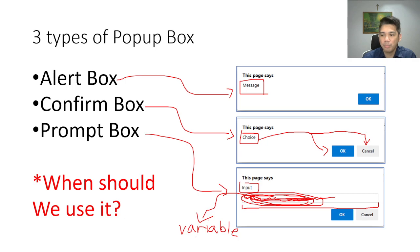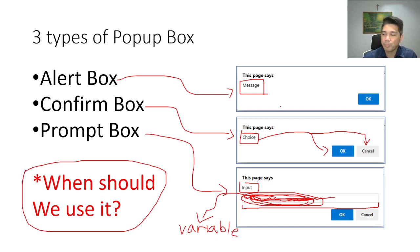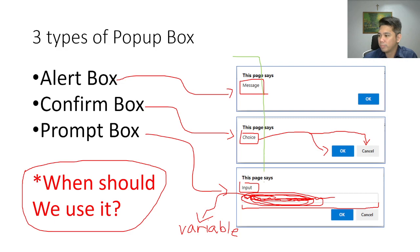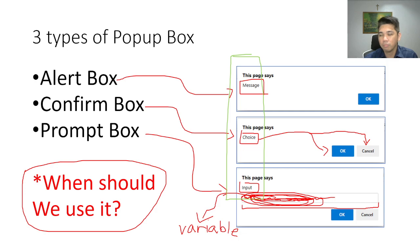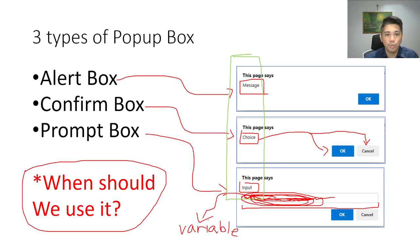The question would be: when is the proper time to use each? The best guide is these three. If we want to convey a message to the user, or display a value of a variable, we use an alert box. If we want to give a choice to the user — whether to proceed or not — we use a confirm box. And if we want something from the user, like an input, that's the time to use the prompt box.